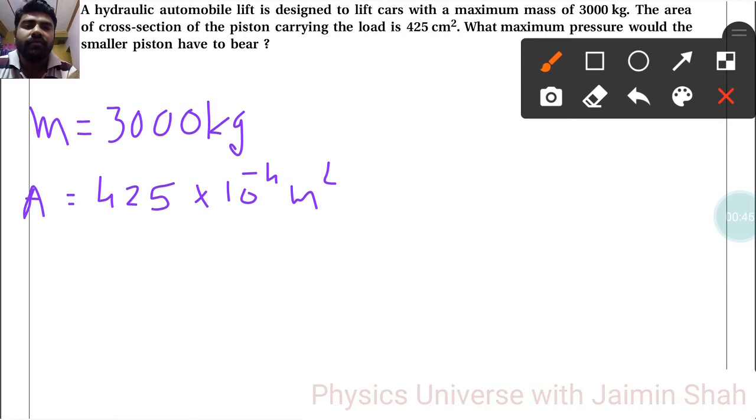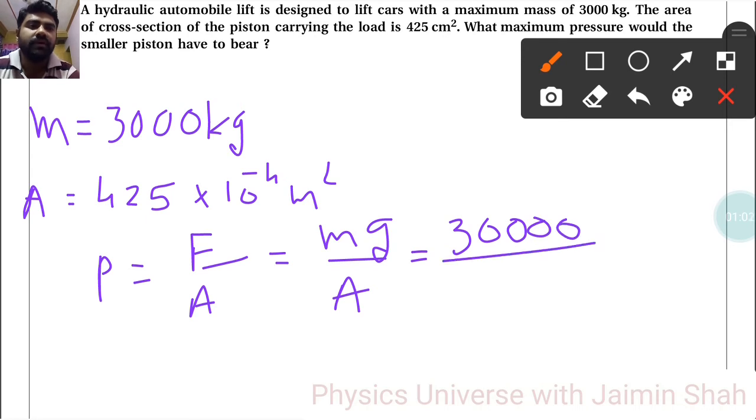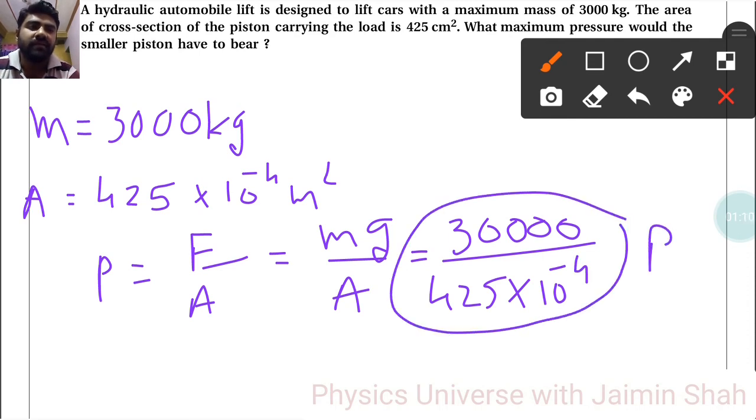Now we know that the pressure formula is force upon area. Force is mg, so pressure equals mg upon area. So 30,000 divided by area, which is 425 times 10 to the minus 4. After this calculation we will get our answer in Pascals.